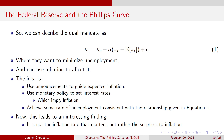We can describe the dual mandate as: U_t = U_N − α(π_t − Eπ_t) + ε_t. U_t is unemployment, U_N is the natural rate of unemployment, π_t is actual inflation, and Eπ_t is expected inflation. The idea is to use announcements to guide expected inflation, then use monetary policy to set interest rates — setting actual inflation — and achieve a rate of unemployment consistent with this relationship.